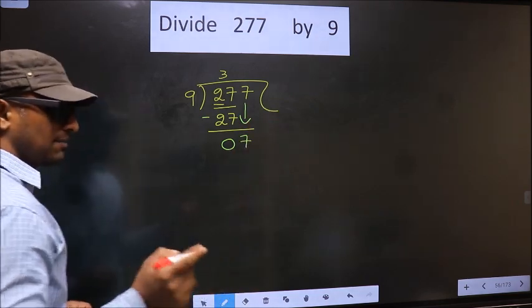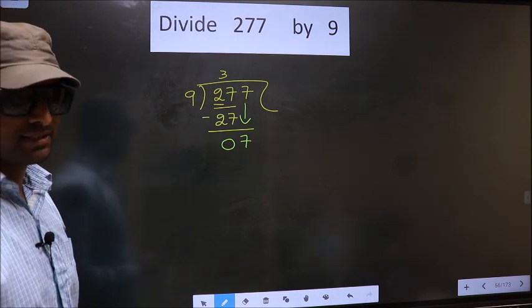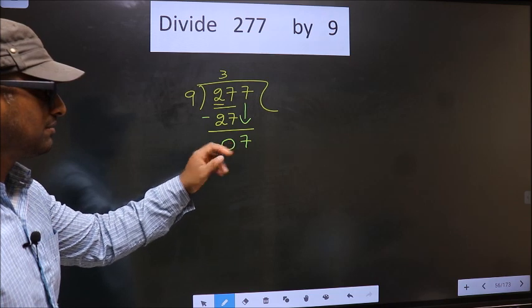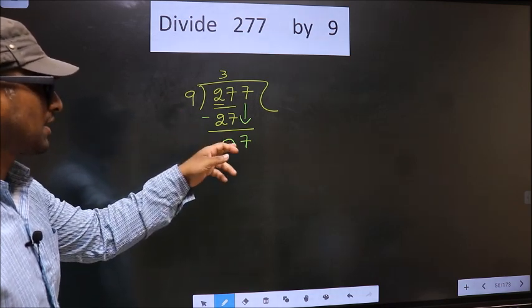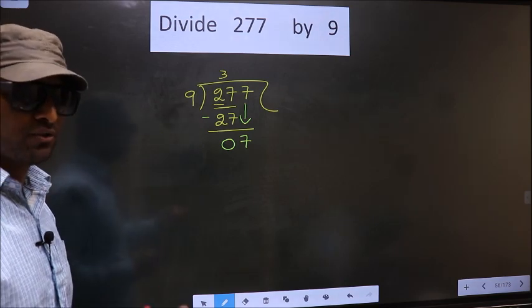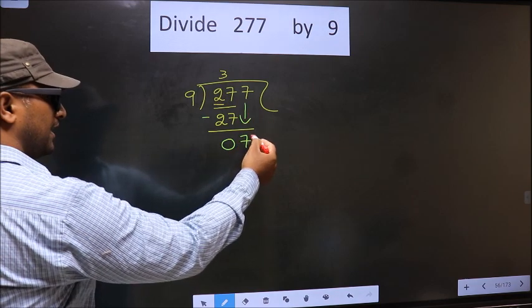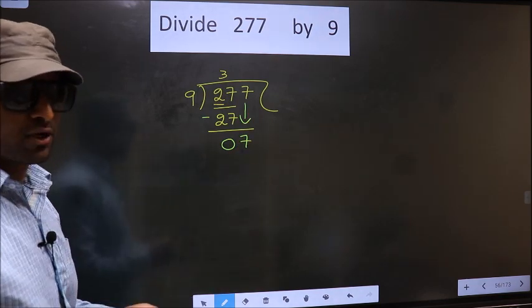This is where the mistake happens. And the mistake is this. Here, we have 7. Here, 9. 7 is smaller than 9. So, what many do is, they put a dot and take 0 here. Which is wrong.